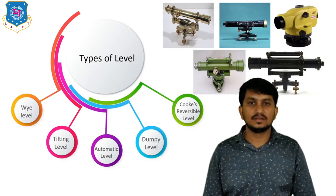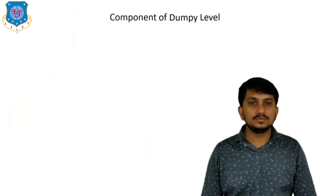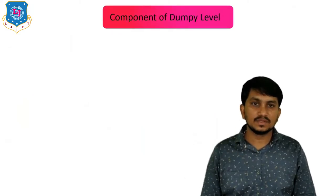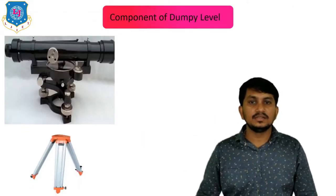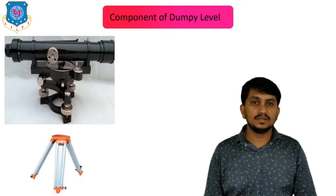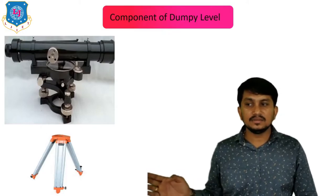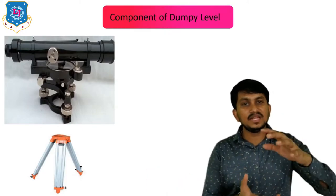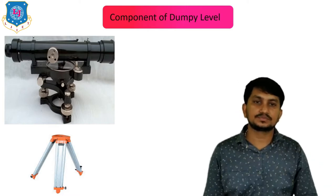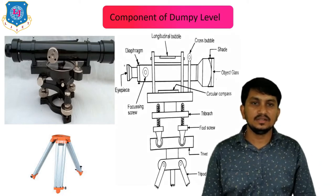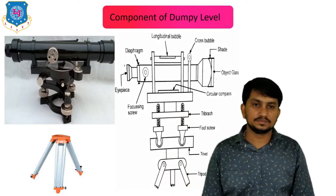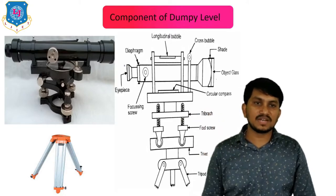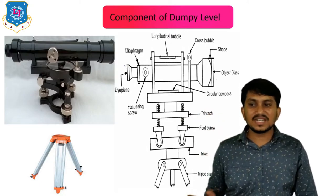Now let's move to the components of the dumpy level. Below the dumpy level is a tripod on which the dumpy level is attached by a screw. We will understand each component starting from the base.